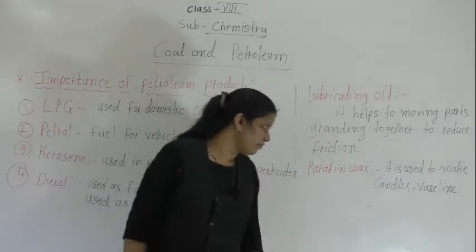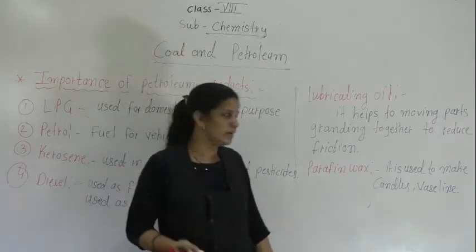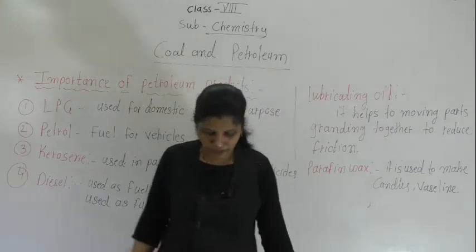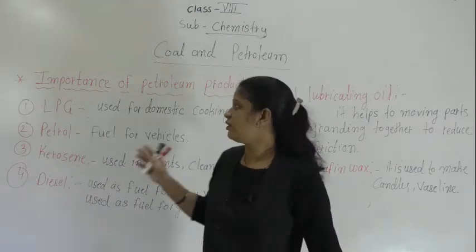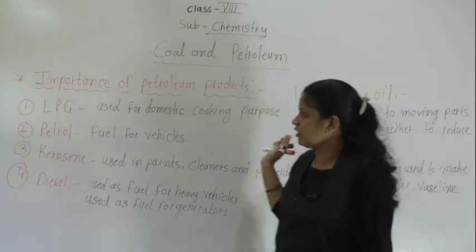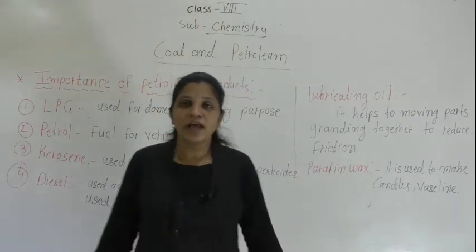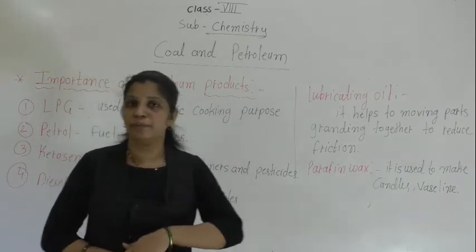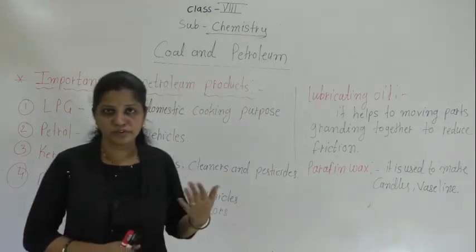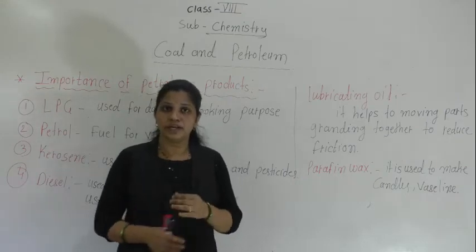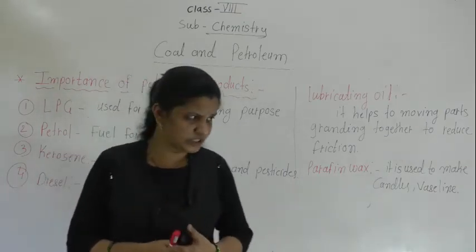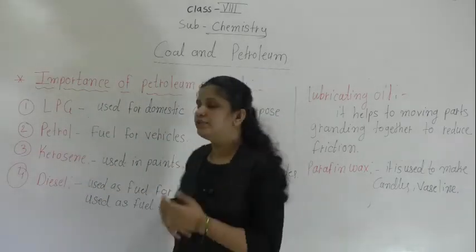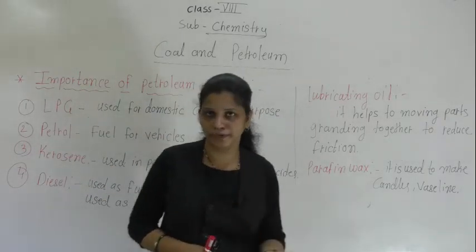Next is paraffin wax. Paraffin wax is used to make candles and Vaseline. So many of these products we are using in our regular life. Petroleum is a naturally occurring substance, and inside petroleum all these products are present, and we use them for different purposes.